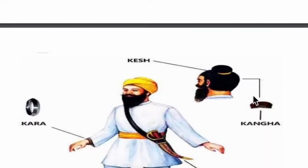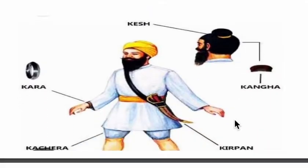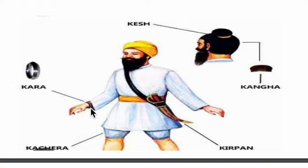So to recap, the five Ks are: Kesh, Kanga (the wooden comb), Kirpan (the sword), Kachera (the short breeches), and Kara (the bracelet made of iron or steel). These are the five Ks introduced by Guru Gobind Singh.